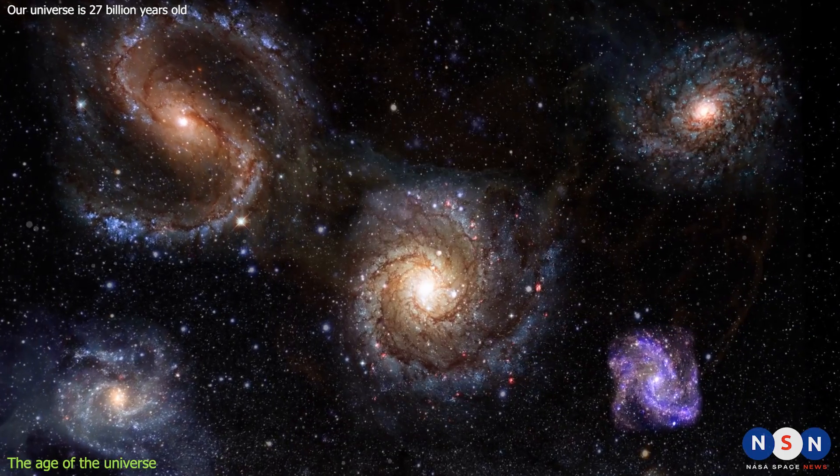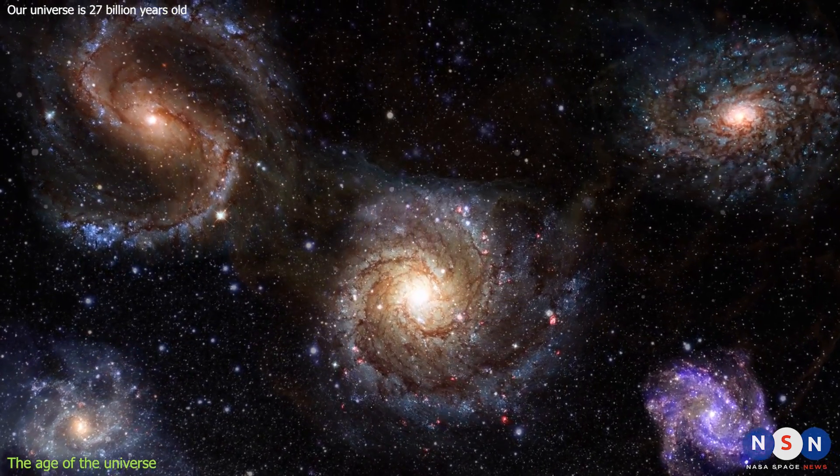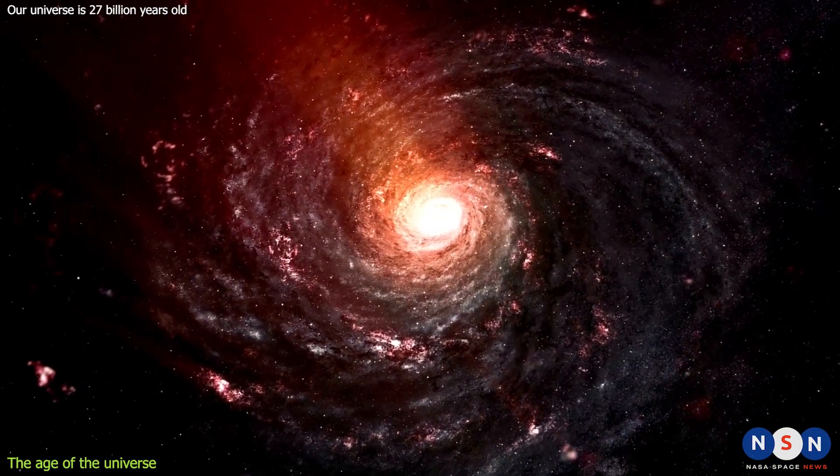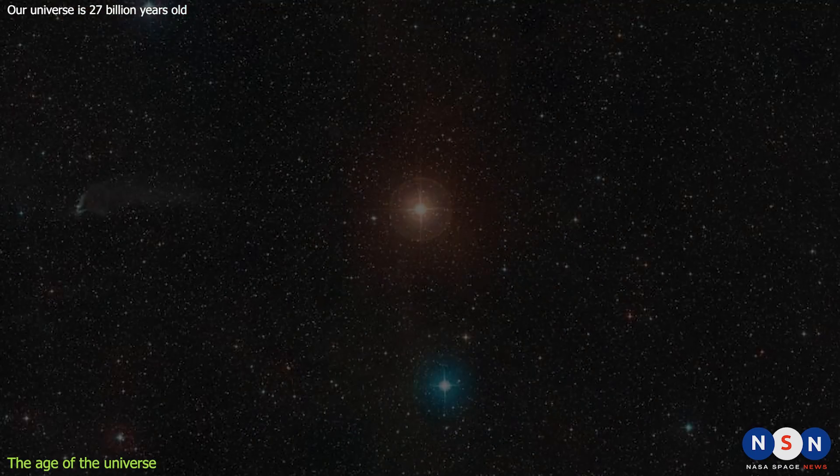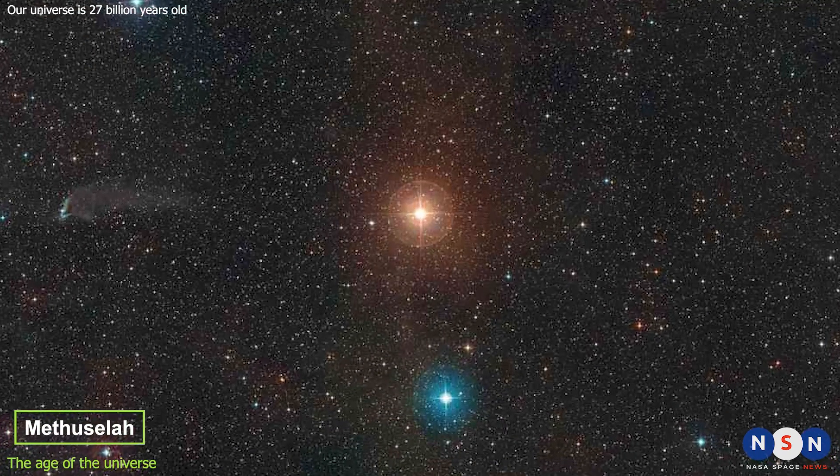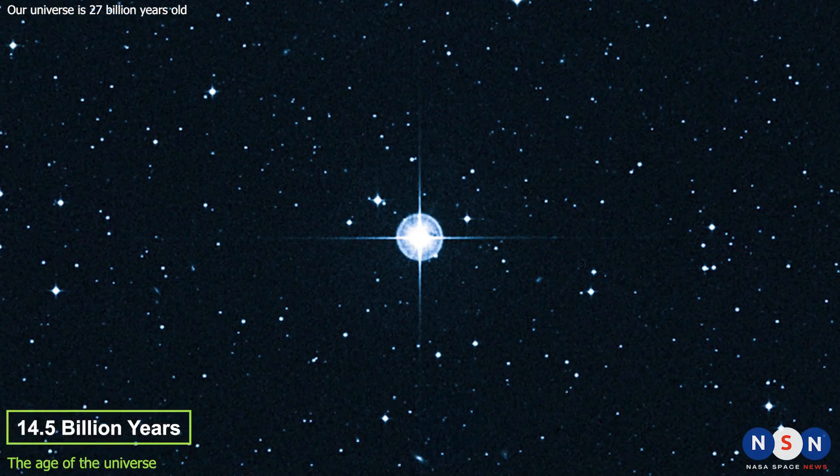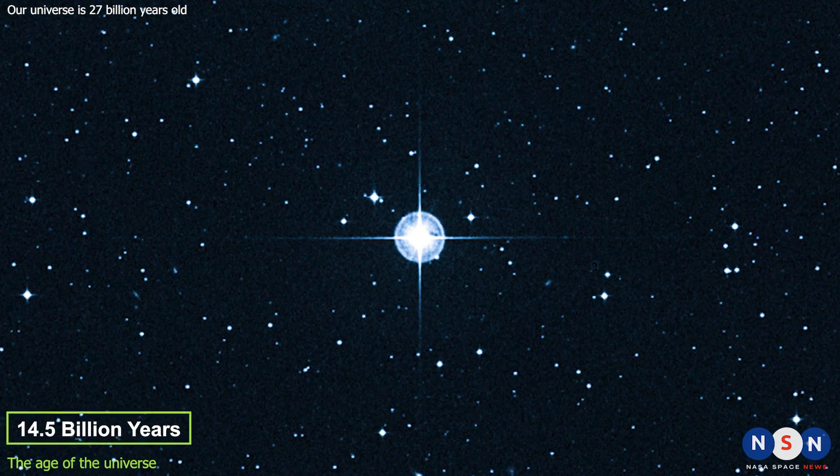One of these problems is that some stars and galaxies seem to be older than the universe itself. That's right, older than 13.8 billion years. For example, one star in our own galaxy called Methuselah has an estimated age of 14.5 billion years, which is clearly impossible if the universe is younger than that.